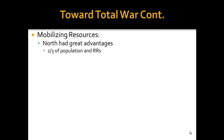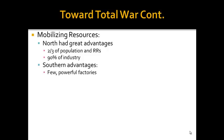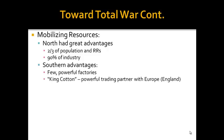The North had great advantages during the war: two-thirds of the population, two-thirds of the railroads, and 90% of the industry. The South had some advantages — although they didn't have as many factories, they did produce quite a few weapons. They also had King Cotton, because cotton was so influential, and they had trading partners in Europe, in particular England.